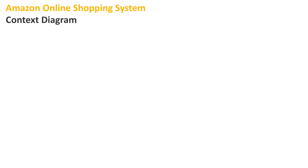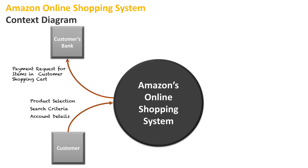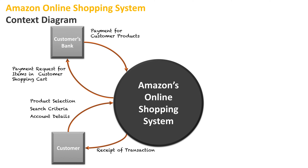We'll first take a look at a context diagram to give us an idea about the external entities and what impacts Amazon's system. The customer accesses the system through their account details and types in a search criteria to look for specific products. When they see products they like, they add them to their cart, which is stored within Amazon. The next step is a payment request to their bank to buy all the things stored in the shopping cart. The bank will give an approval and pay for the customer's products, or they'll be declined. Then the customer gets a receipt and the products are packaged by Amazon and sent to their door.